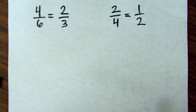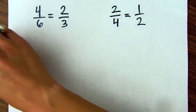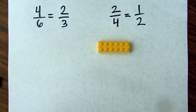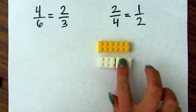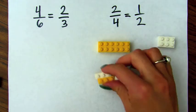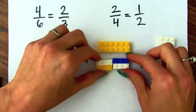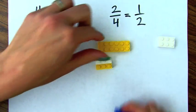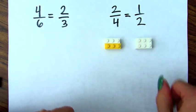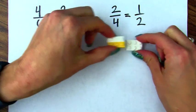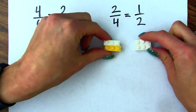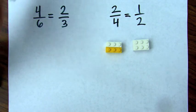Now we're going to look at two-fourths and see how it's equivalent to one-half. Here's the whole. Remember, these were the halves, so I'm going to put one-half over here. The fourths were these. So I'm going to put two-fourths and one-half together to see how they're equivalent. See how they're the exact same size? You can even stack them or set them next to each other to see they're the same size. So two-fourths is equal to one-half.